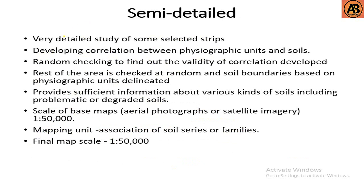Semi-detailed soil survey involves very detailed study of some selected strips, developing correlation between physiographic units and soils, with random checking to find the validity of the correlation developed. The rest of the area is checked at random and soil boundaries based on physiographic units are delineated. It provides sufficient information about various kinds of soils including problematic and degraded soils. Base maps use aerial photographs or satellite imagery, with mapping units of association of soil series or families.